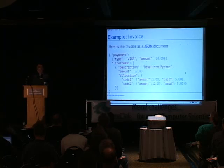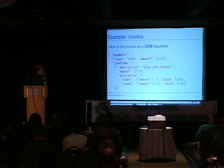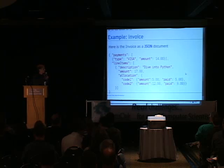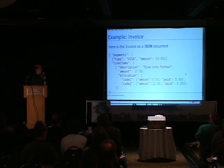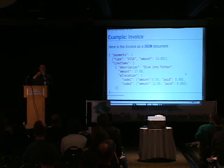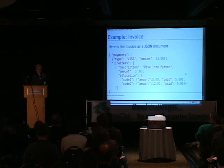Here's what the document looks like if we just put it as a JSON document — it's pretty simple. We've got a list of payments with some attributes, some line items, we store our allocation as a dictionary of codes, and we record the amount paid on each code. This is a lot simpler and easier to understand than the relational schema we came up with.